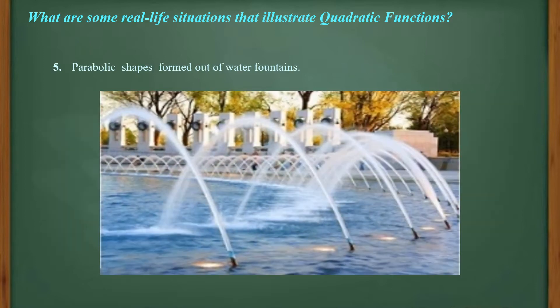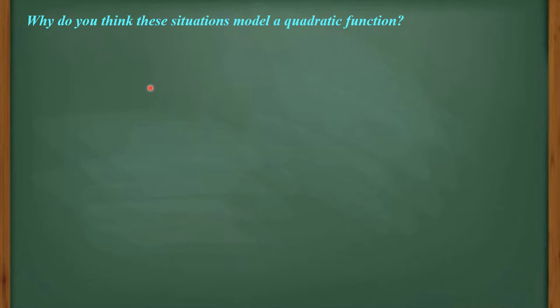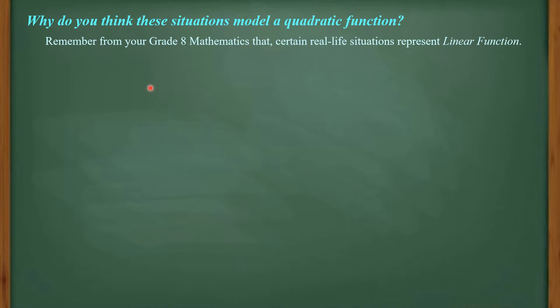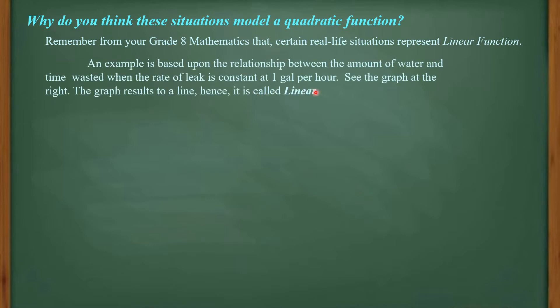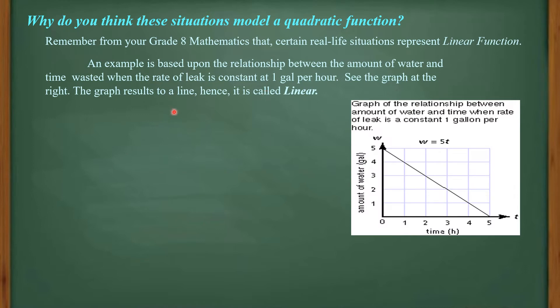Number 5 is parabolic shapes formed by water fountains, such as the ones seen in Luneta or Bagong Bayan. Why do these situations model a quadratic function? Remember from your grade 8 mathematics that certain real-life situations represent linear function — for example, the relationship between the amount of water and time wasted when the leak rate is constant at 1 gallon per hour. The graph results in a straight line, hence it is called a linear function.